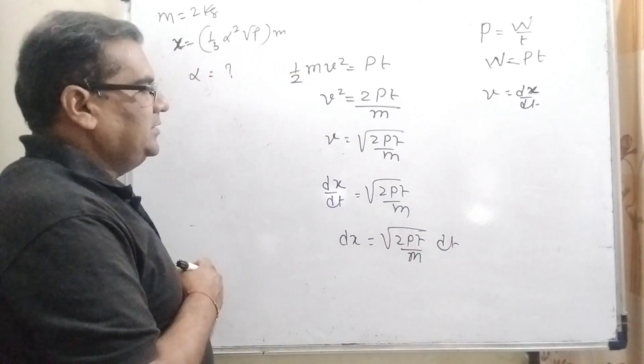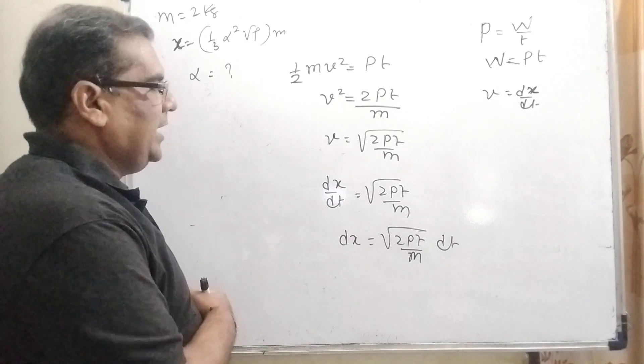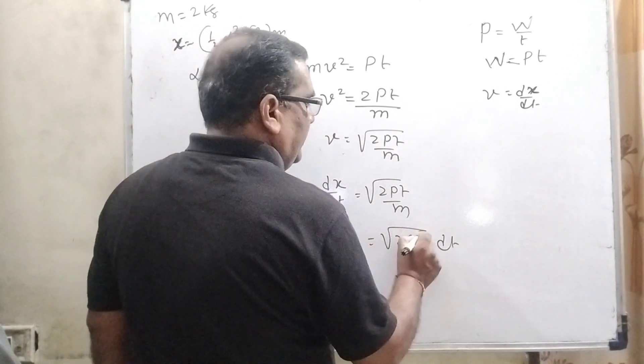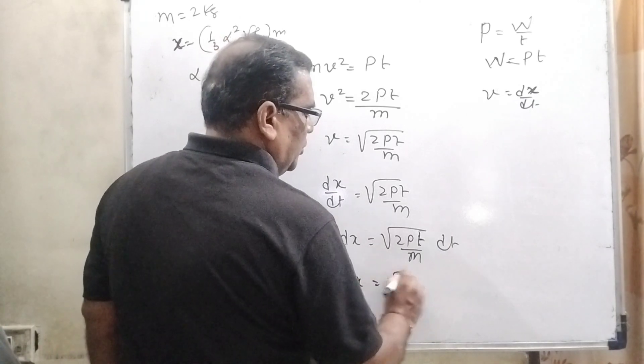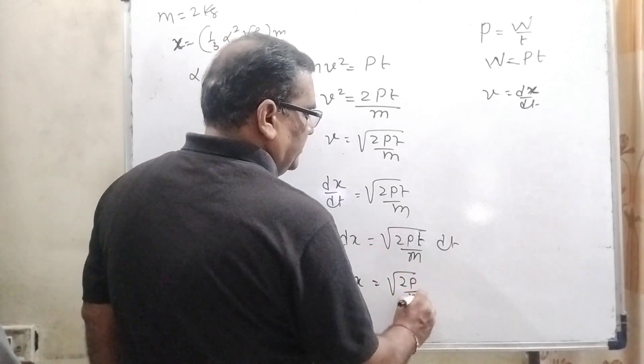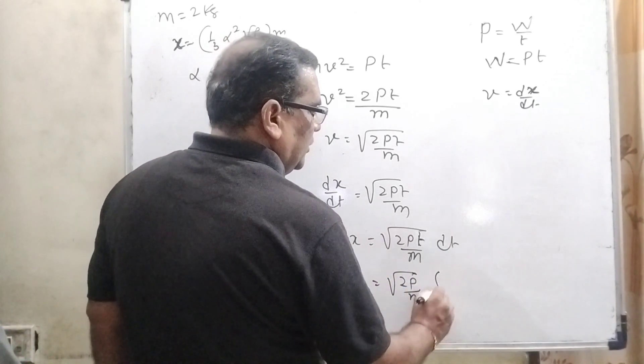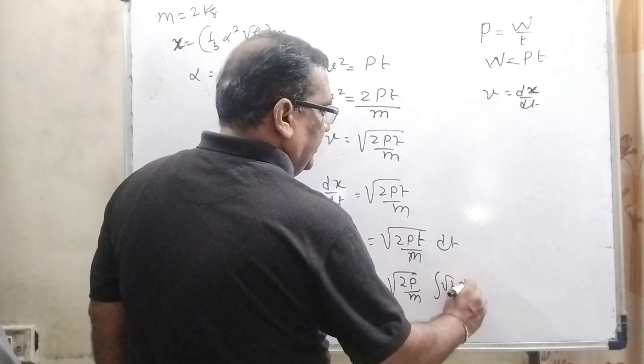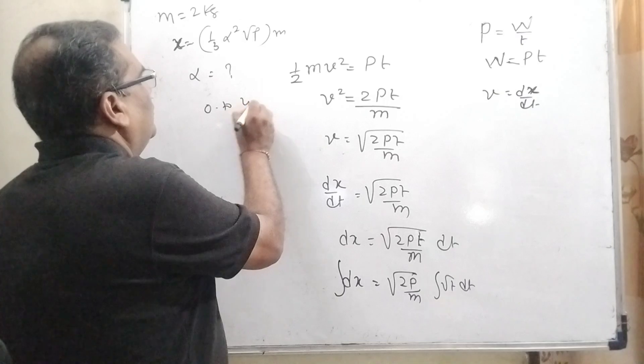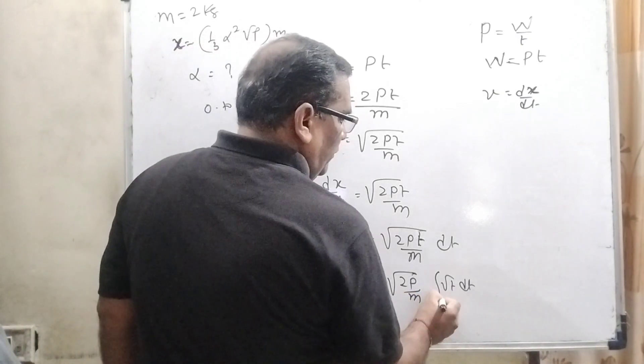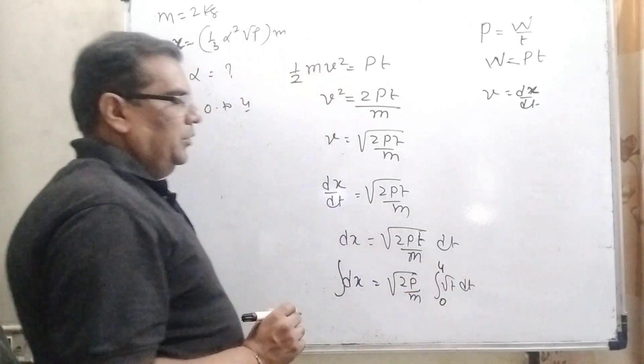We have to calculate displacement, means integrate both sides. Here T is variable, so it can be written as dx equals √(2P/M) √T dt. The time limit given is 0 to 4 seconds.